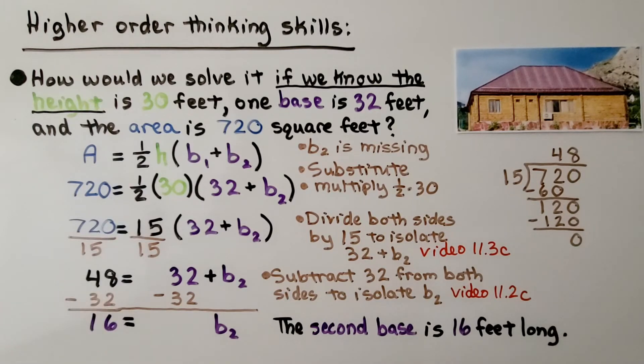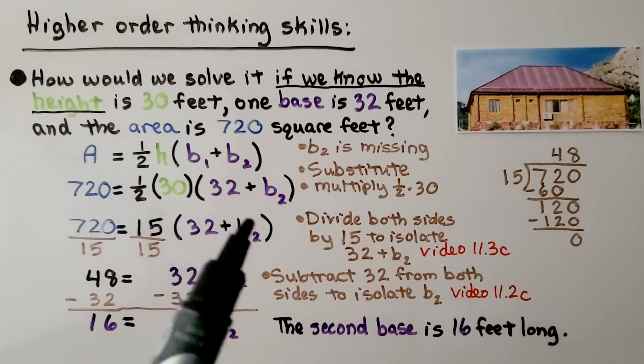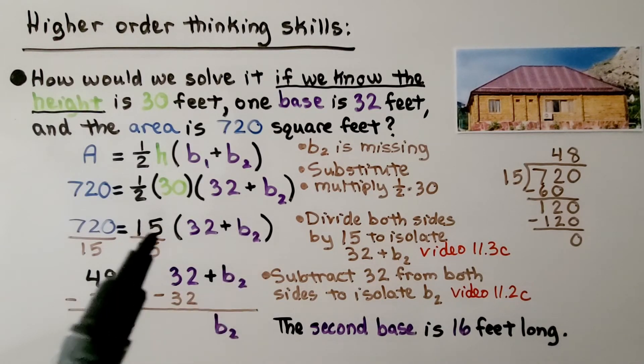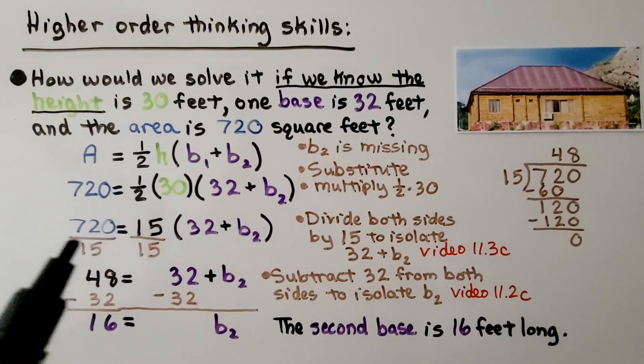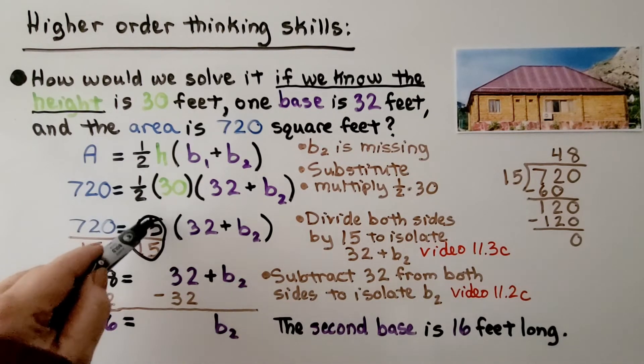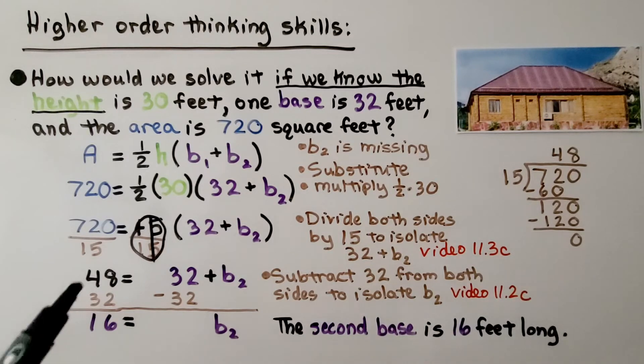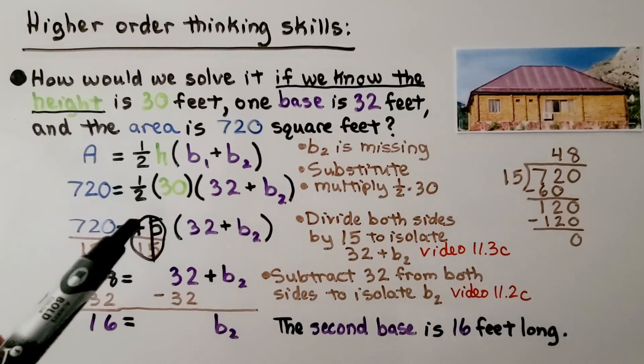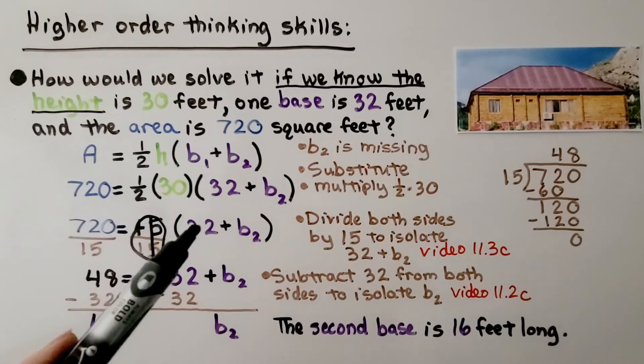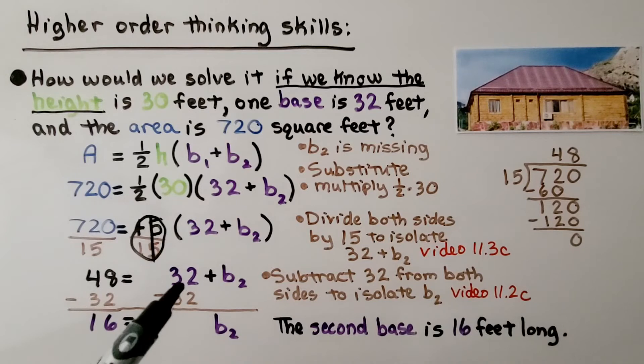Now we divide both sides by the 15 to isolate this 32 plus b sub 2 to one side. That's going to create a giant 1, our invisible 1 buddy. 720 divided by 15 is 48, and now we have 1 times 32 plus whatever base 2 is. By the identity property, it's going to be 32 plus whatever base 2 is.